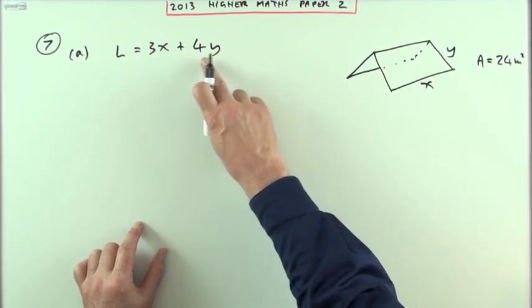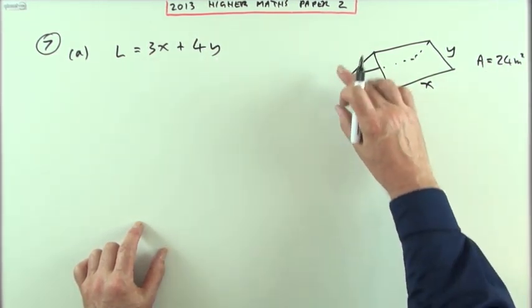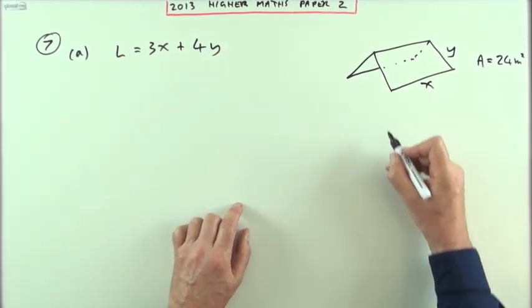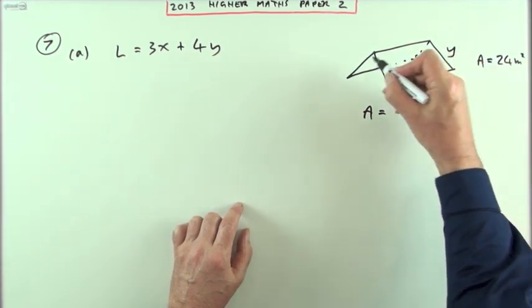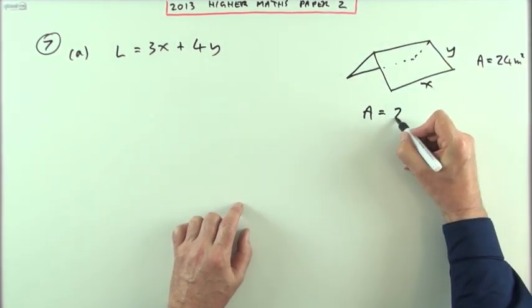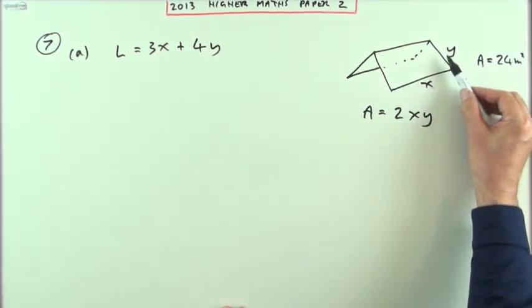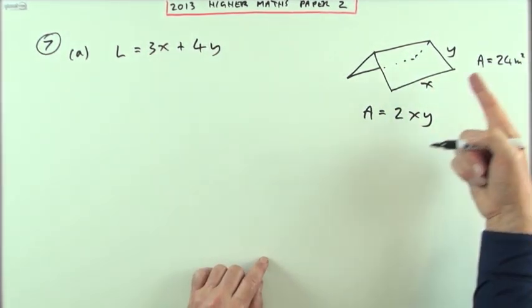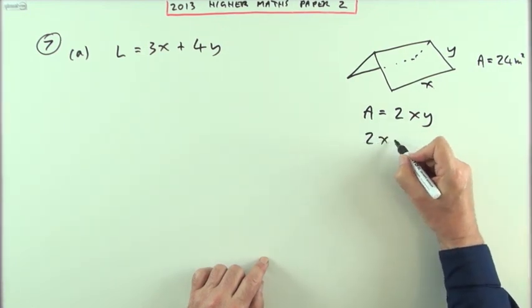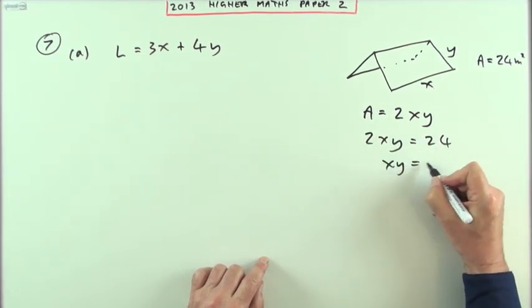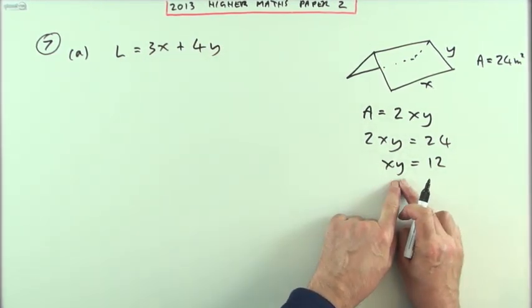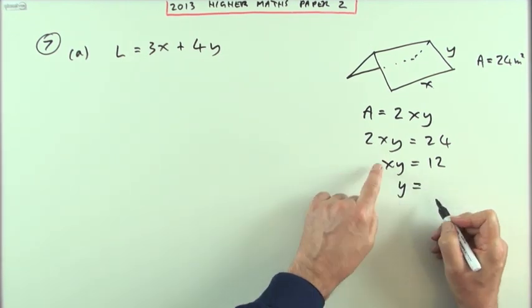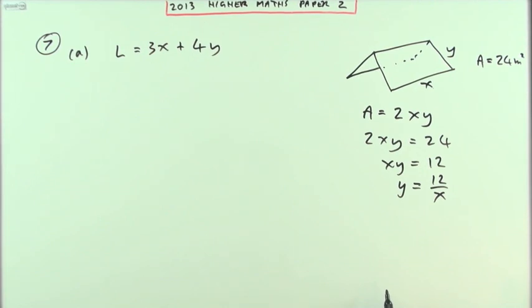The other condition was an area. So you're looking for a connection between x and y that involves an area. Well that must be the area of that complete sheet. Now the area of that sheet will be given by length times breadth. That'll be x times y but doubled because there's two halves to it. So the area will be 2xy. Tells you the area is 24 so 2xy equals 24 so xy equals 12. Rearrange this to read y equals 12 upon x.